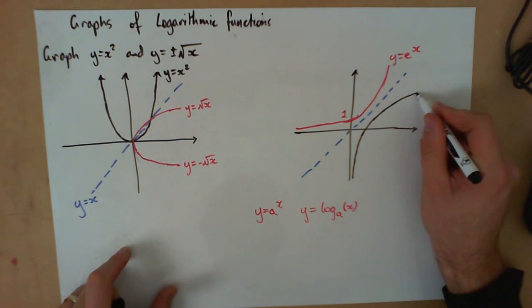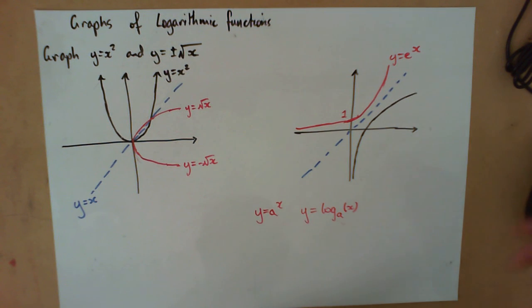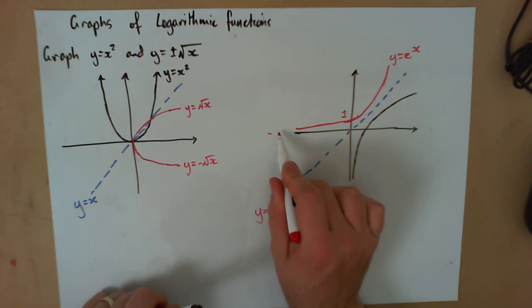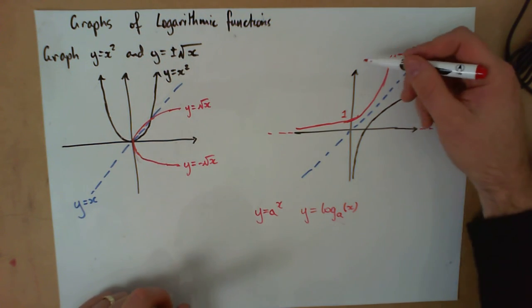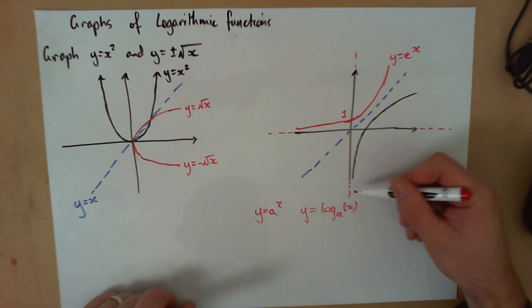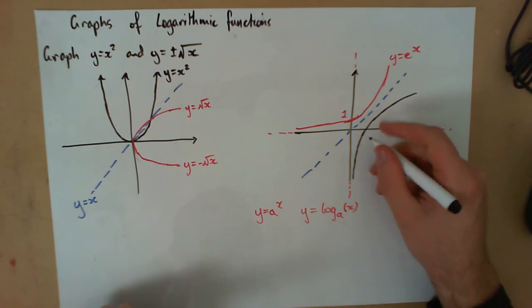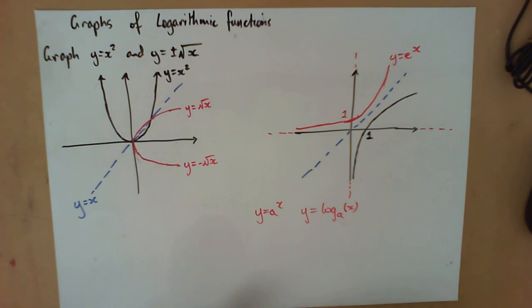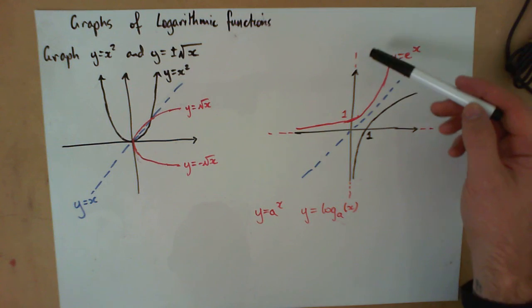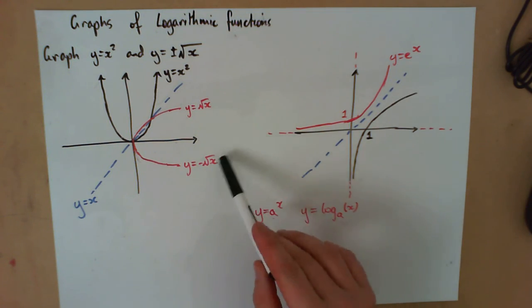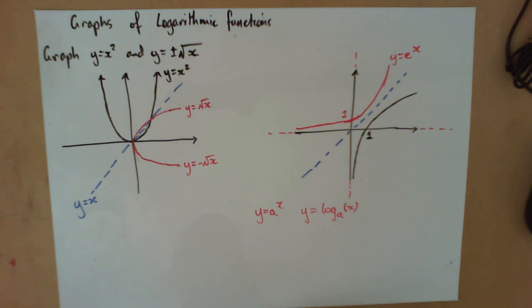What we find for our logs looks like this. We know that for exponentials we had a horizontal asymptote along the x-axis, but this time for our logs we've got a vertical asymptote. We can also tell that the graph is going to intercept our x-axis at one. So what were y-intercepts are now x-intercepts, and what were vertical asymptotes are now horizontal asymptotes — the same idea as with squares and square roots.